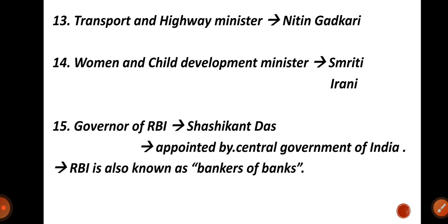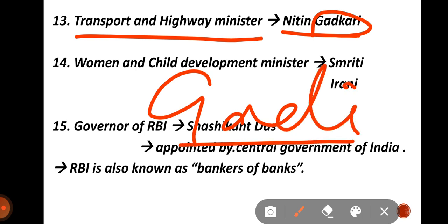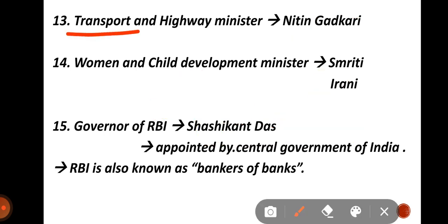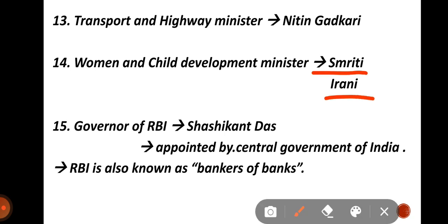The 13th is our Transport and Highway Minister — that is Nitin Gadkari. Remember the name: Gadkari is associated with transport vehicles. The Women and Child Development Minister is Smriti Irani. She was also our Education Minister at the start but was removed within a month, after which Ramesh Pokhriyal became Education Minister.